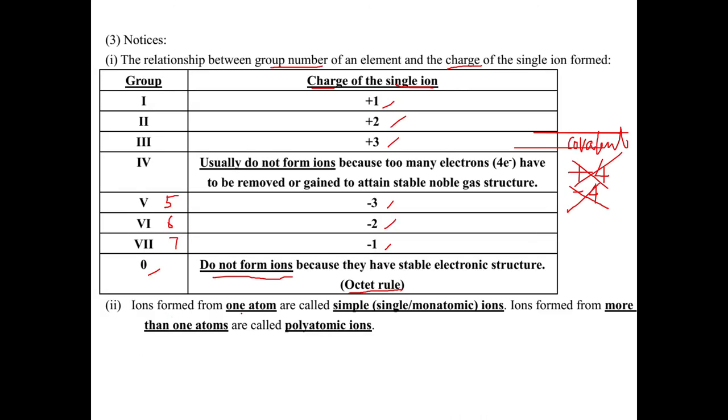For the iron formed from one atom, we say simple iron, or say single iron, or say monoatomic iron. Mono comes from monoatomic. Mono means one. Atomic means atom. Monoatomic means only one atom, so means simple, means single. For the iron formed from more than one atom, we say polyatomic iron. Poly means many, more than one. For example, we have carbonate. Carbonate is CO3 2 minus. You find it has one C and 3 O, four atoms, so more than one. We say it as polyatomic iron.